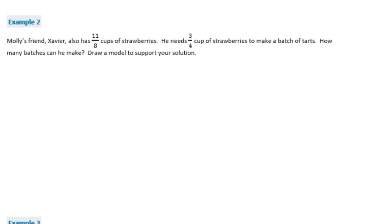Example two. Molly's friend Xavier also has eleven-eighths cups of strawberries. He needs three-fourths cup of strawberries to make a batch of tarts. How many batches can he make? Draw a model to support your solution. He has eleven-eighths, but this time we need to split it into three-fourths cups. The problem is they don't have the same denominator, so just like when we were adding and subtracting fractions, we need to find equivalent fractions or common denominators. The good news is we already know how to do that.